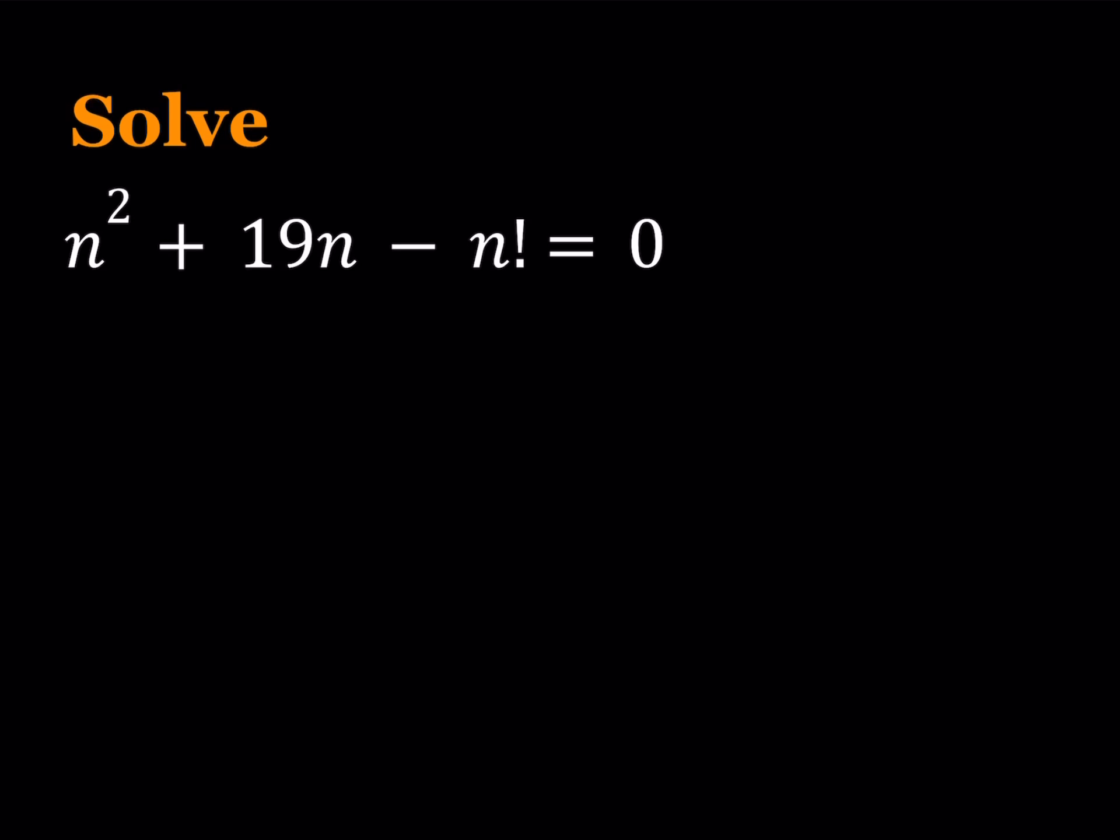First of all, I would like to isolate the factorial. So let's write it this way: n squared plus 19n equals n factorial. The left-hand side is factorable, so let's take out n here. This becomes n times n plus 19 equals n factorial.